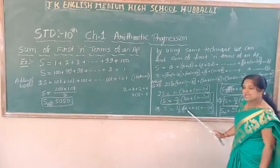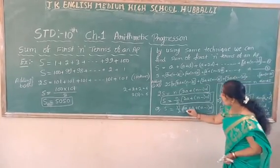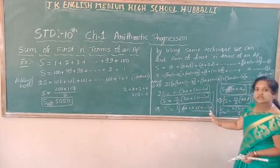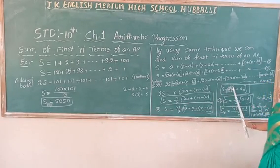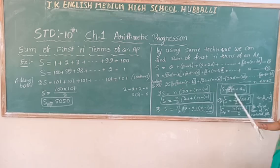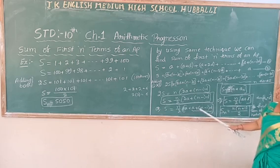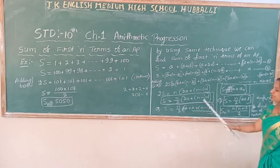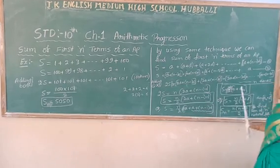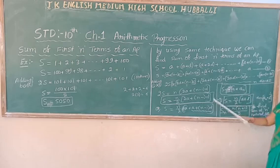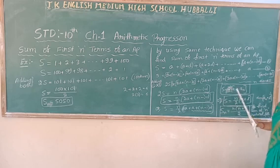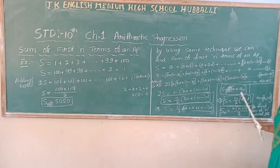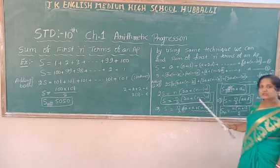Now if I split this 2a as a plus a, and replace a plus n minus 1 into d — which is nothing but the nth term, a sub n — then S equals n by 2 into a plus a sub n. We can write it in this form also. When we know only n, the first term, and the last term, we can use this formula.